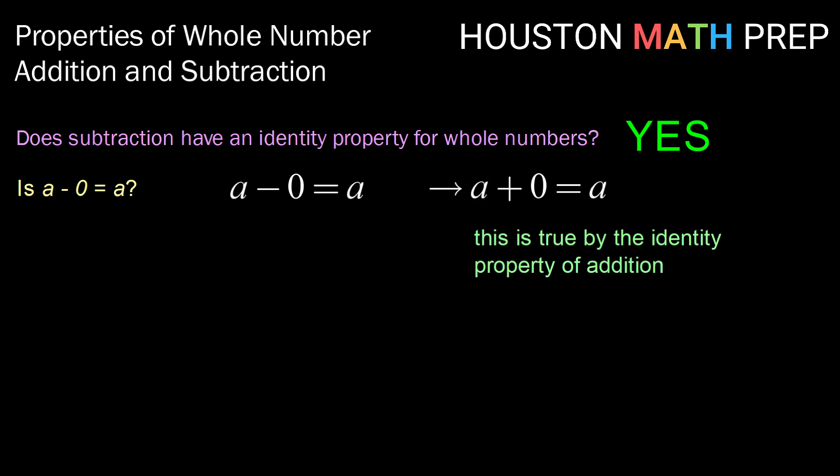The subtracting identity is, again, 0. Alright guys, that does it for this video on properties of whole number addition and subtraction. Thank you for watching. We'll see you in the next one.